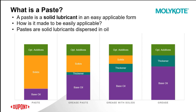The primary function of the paste is to apply a solid lubricant onto an interface in a very easy-to-use format. Once the carrier oil wears away, the solid lubricant is left to continue lubricating the interfacing surfaces. This is different from a grease formulation, which uses the base oil as its primary lubricant — so for a grease, it's the base oil that's lubricating; in a paste, it's the solid lubricant.